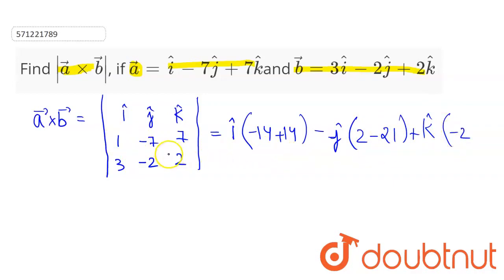For the k cap term, 1 times minus 2, minus minus 7 times 3, so this will be positive 21.